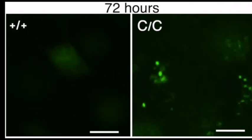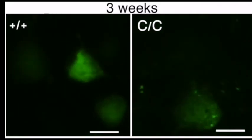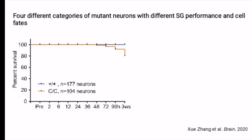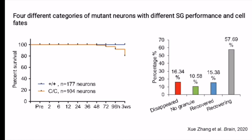Interestingly, most of the mutant stress granules were cleared up by weeks. More importantly, the TIA1-EGFP positive neurons disappeared in the FUS mutant model cortex after stress treatment. According to their different cell fate and stress granule performance, TIA1-EGFP positive neurons are classified into four categories: neurons that disappeared, neurons with no granule formation, stress granule recovered, and stress granule still recovering by the end of our experiment.